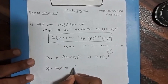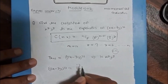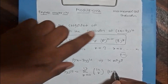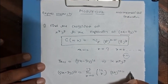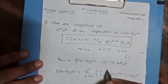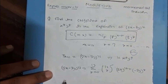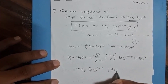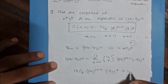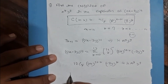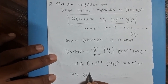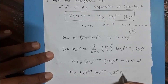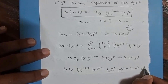So (2x minus 3y) to the power 12 equals the summation from r equal to 0 to 12 of 12Cr times (2x) to the power (12 minus r) times (minus 3y) to the power r. We can write this as 12Cr times (2x) to the power (12 minus r) times (minus 3) to the power r, and this equals k times x to the power 9 times y to the power 3.